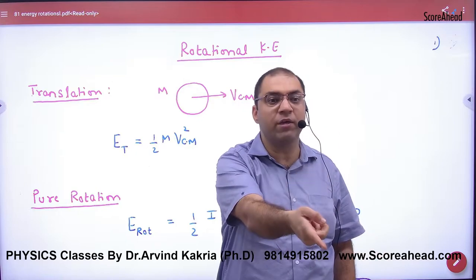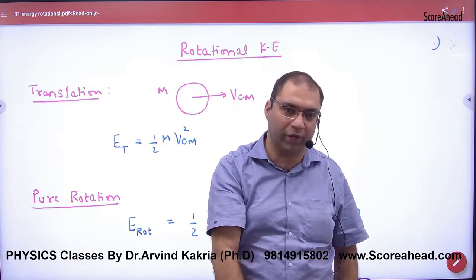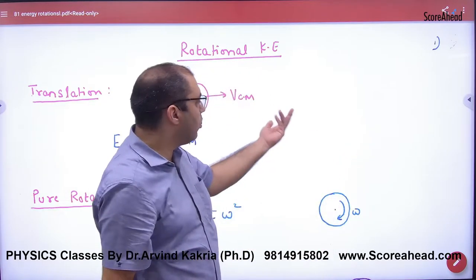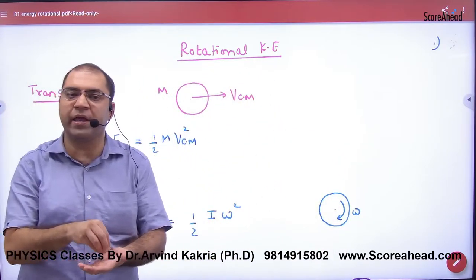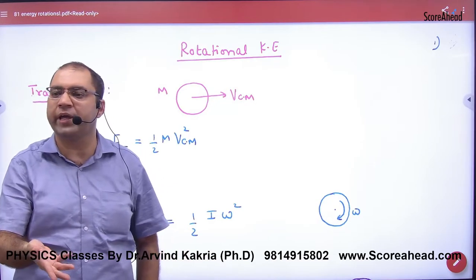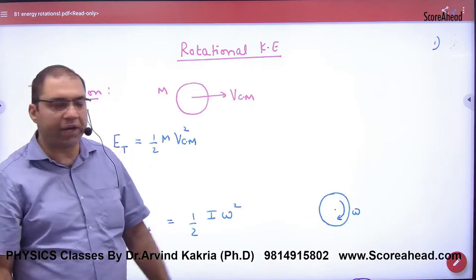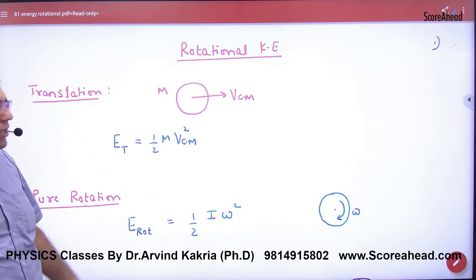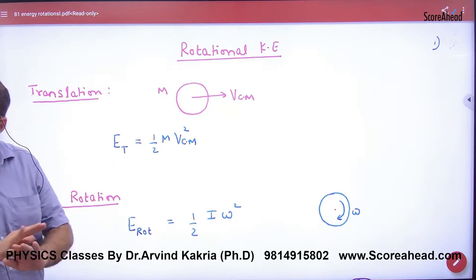So energy will also be used in three ways. If I say pure translation, then pure translation energy equation will be in terms of the center of mass. Because who does pure translation in rolling? The center of mass. So if the velocity of the center of mass, what will pure translation kinetic energy be? Half mv square.